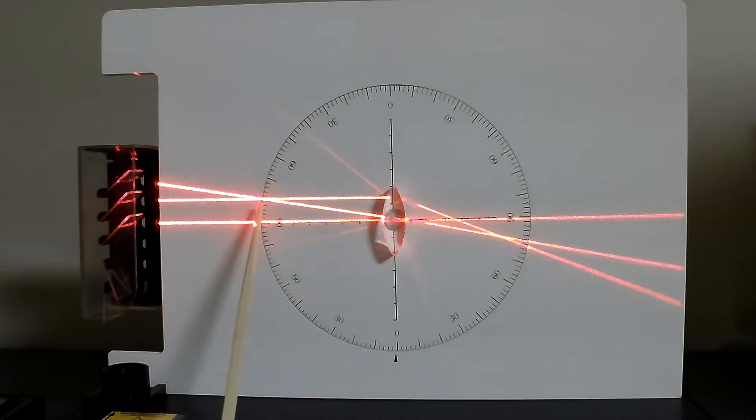In this setup, we have the object being represented as these two crossed lines. When they go through the lens, this represents the real image.